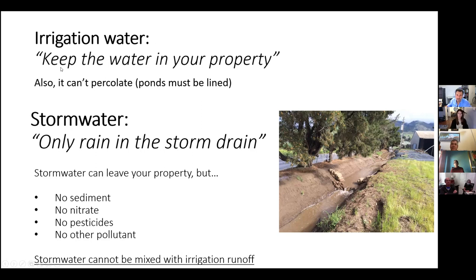For irrigation water, the regulation is: keep all the water in your property. All your irrigation water must remain on your property. Typically you will have to build a lined pond where all this water is collected, and from this pond you can repump and reuse it — some folks reuse it to irrigate again using treatment technologies, and some folks use it for dust control, which is perfectly fine.